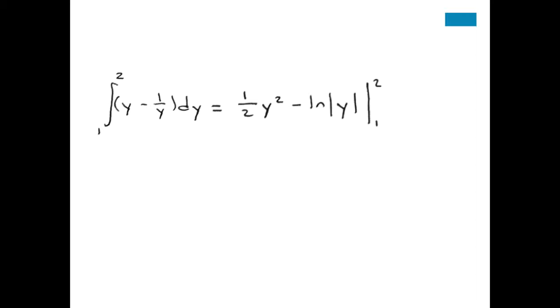All right, so we've got integral from 1 to 2, y minus 1 over y dy. Take the antiderivatives, and you're going to plug in 1 and 2 and subtract. So, we get 4 halves minus ln 2 minus 1 half minus ln 1. Remember, ln 1 is equal to 0, so we get 3 over 2 minus ln of 2.